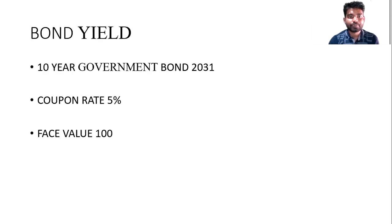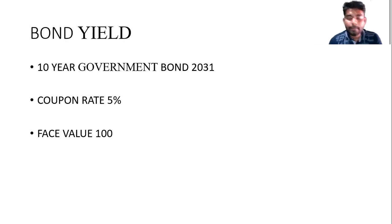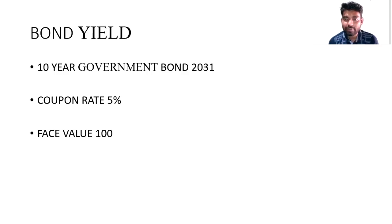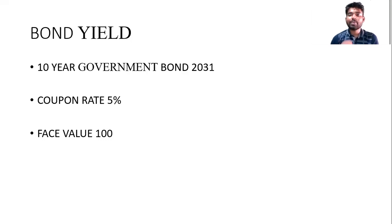Now, what exactly is a bond yield? In a nutshell, bond yields are the actual return that you get on your actual investment. For example, a 10-year government bond maturing in 2031 has a coupon rate of five percent and a face value of 100 rupees. So if I buy one bond, this government bond will give me five rupees a year.